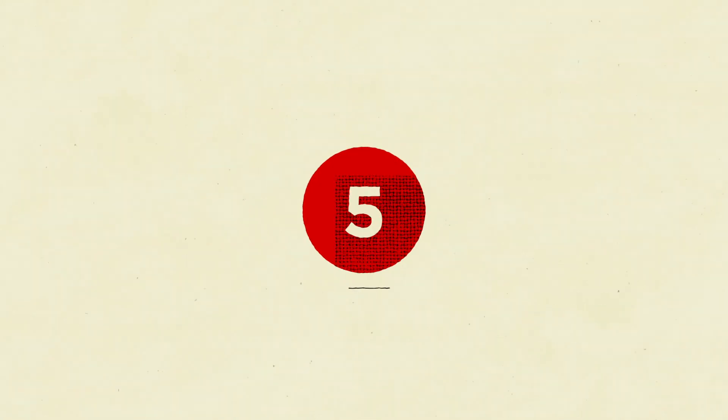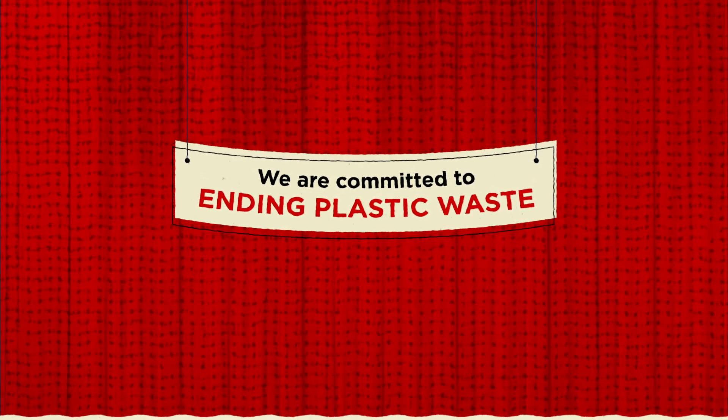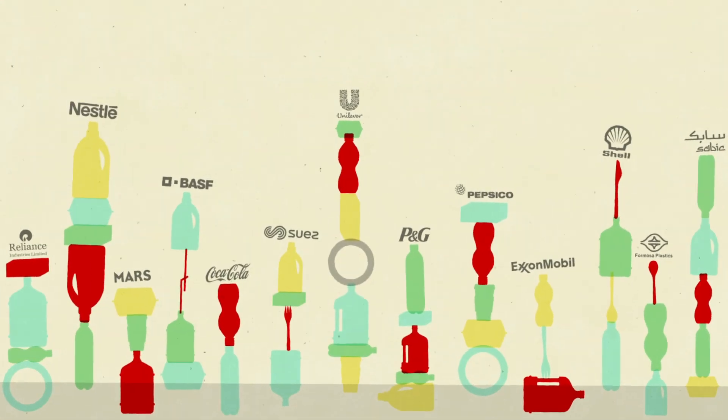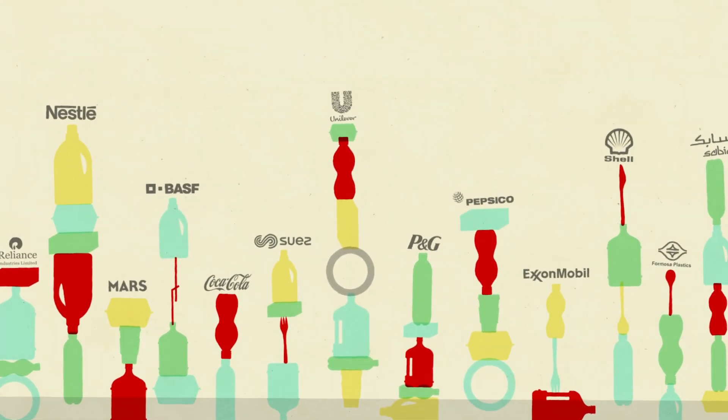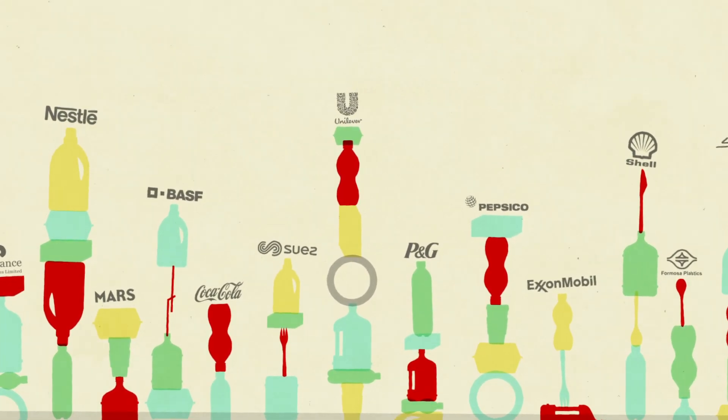5. The ugly truth is that the biggest promoters of chemical recycling are big oil, plastic producers, and consumer brands, including many of the worst plastic polluters.